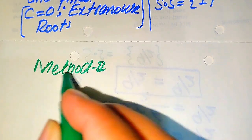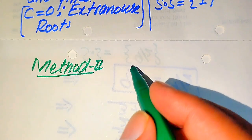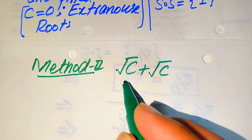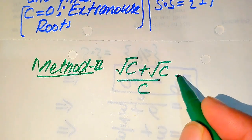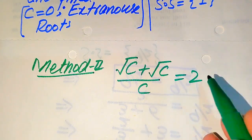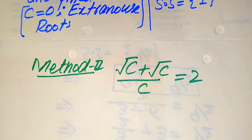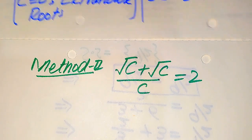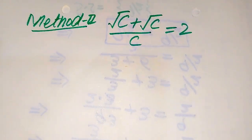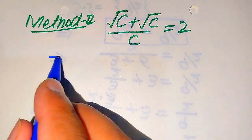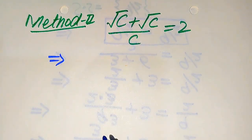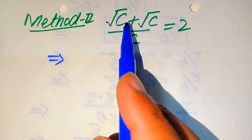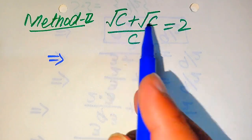Now we solve this problem using the second method. We copy down the given equation: square root of C plus square root of C divided by C equals 2. In this method we use a different, smarter approach to find the values of C.